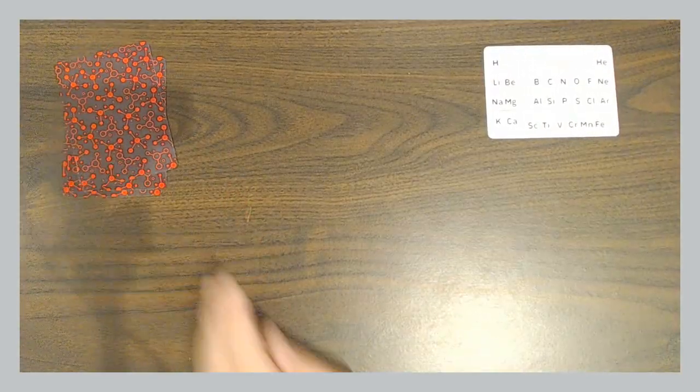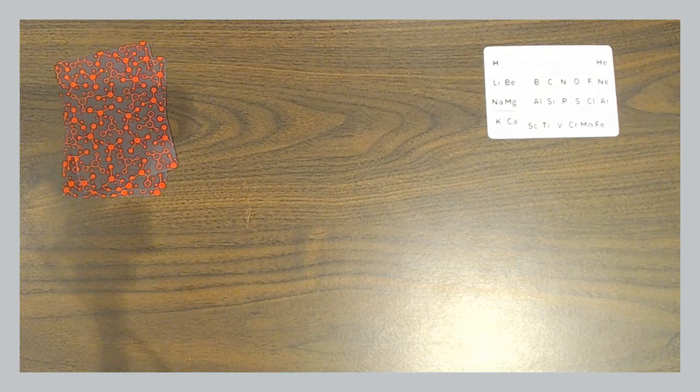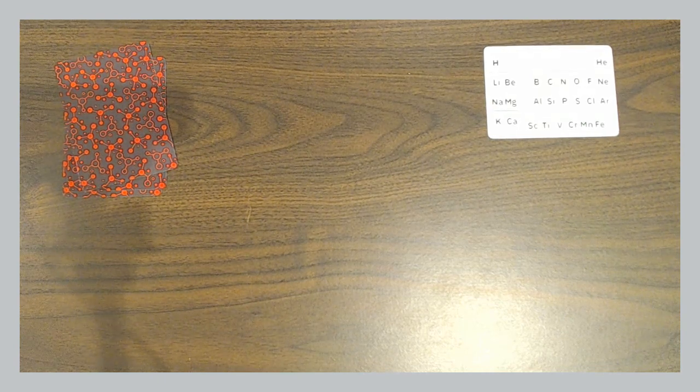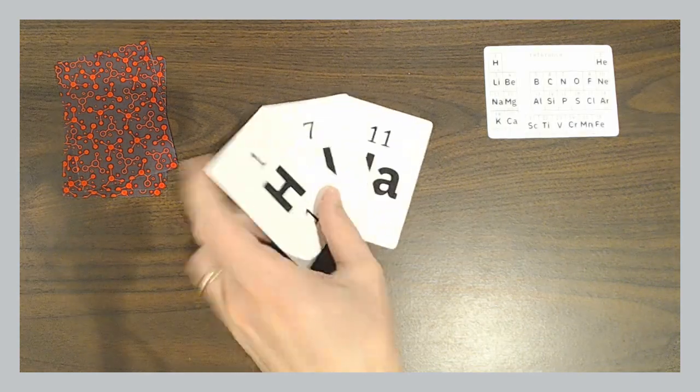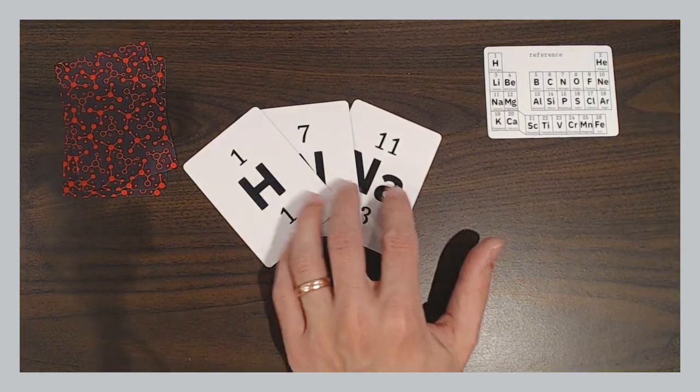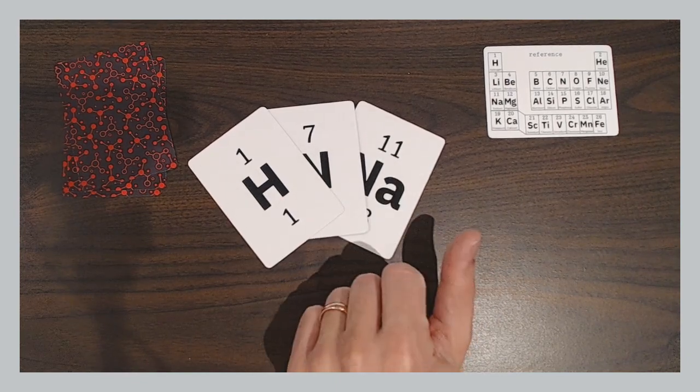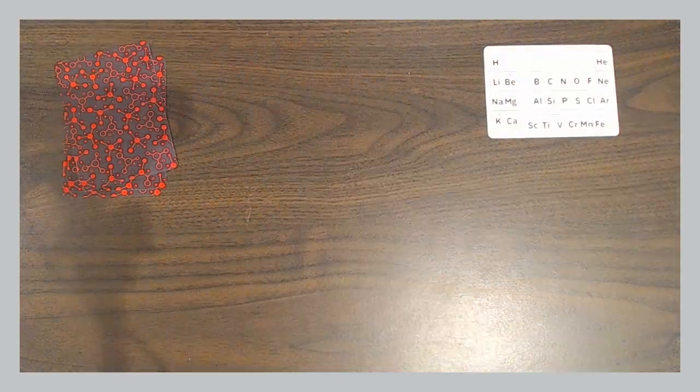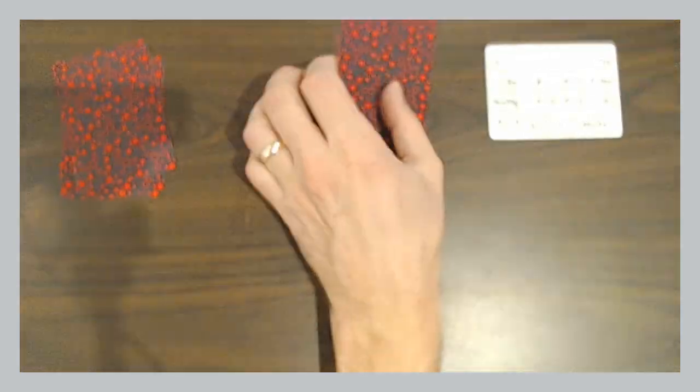Whoever answered correctly first gets those cards as points. Then you draw the next three cards. Whoever multiplies 1 times 7 times 11 first says the right answer. They get those three as their points.